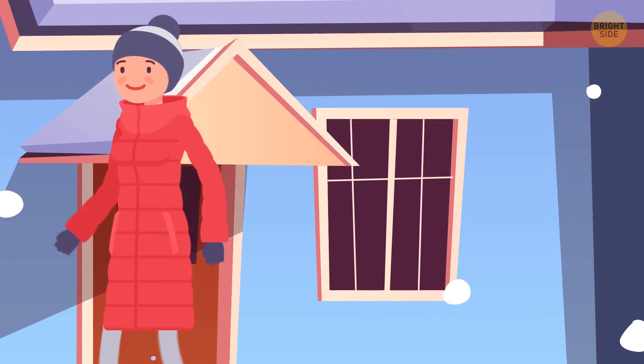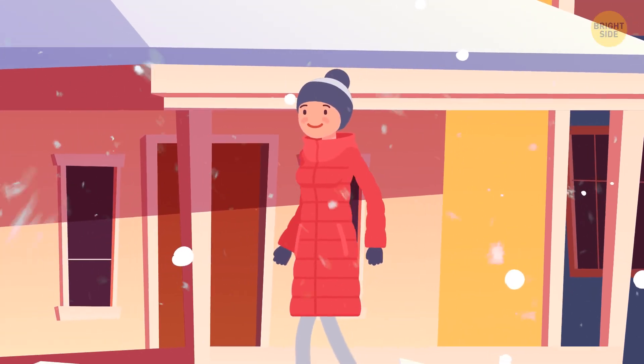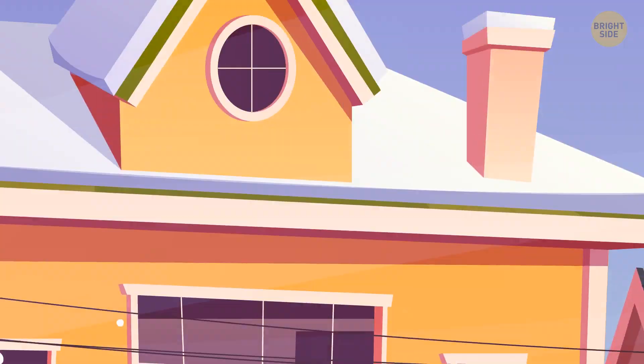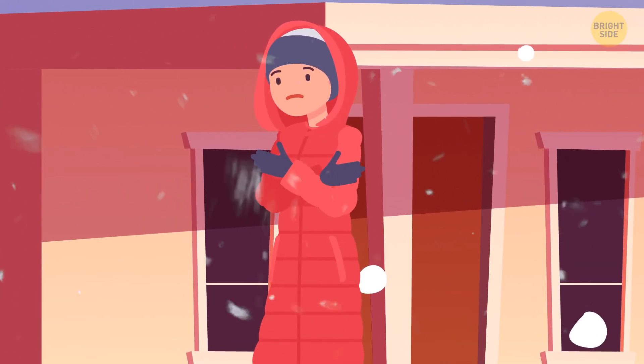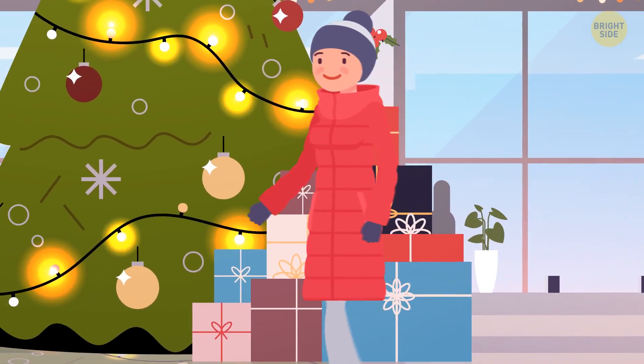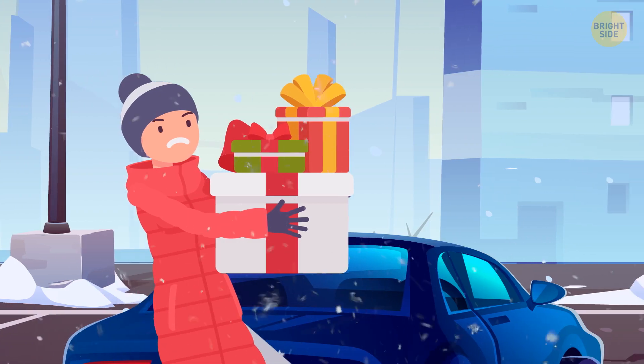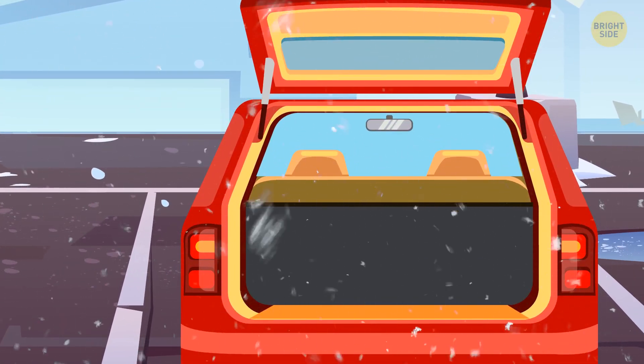Ann absolutely loathes winter, but just like anyone else, she has to go out and do stuff. She had just moved to a snowy city for work and experiences some of the coldest winters. But she managed to make it to the mall to do some quick shopping through a huge blizzard. When she came back to her parked car, she discovered that someone broke into it and took her belongings.